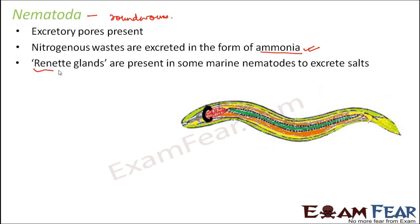Rennet glands are not present in all nematodes — they are mainly present in the marine nematodes, those present in marine water or sea water. In sea water there are a lot of salts, so nematodes in a marine environment tend to take in a lot of salt, and that excess salt needs to be excreted out from their body. For that purpose they have these specialized unicellular glands called rennet glands. One nematode can have one or multiple rennet glands.